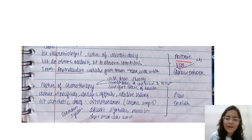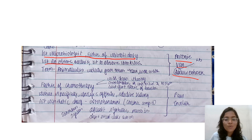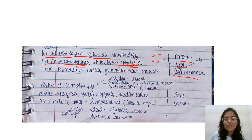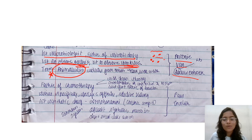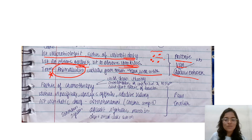Next is Antonie van Leeuwenhoek. He is regarded as the first microbiologist and the father of microbiology because he was the first to observe bacteria and protozoa. He observed small organisms in water — rainwater and well water — which were animal-like, and he termed them 'animalcules.'